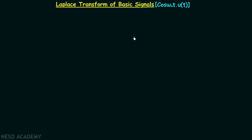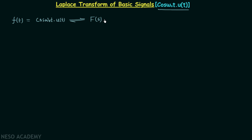Let's calculate the bilateral Laplace transform of the time domain signal cos(ω₀t) multiplied by u(t). Our time domain signal f(t) is equal to cos(ω₀t) multiplied to the unit step signal u(t). We are interested in calculating the bilateral Laplace transform, represented by F(s), and we will also calculate the region of convergence — the region in which F(s) is finite.